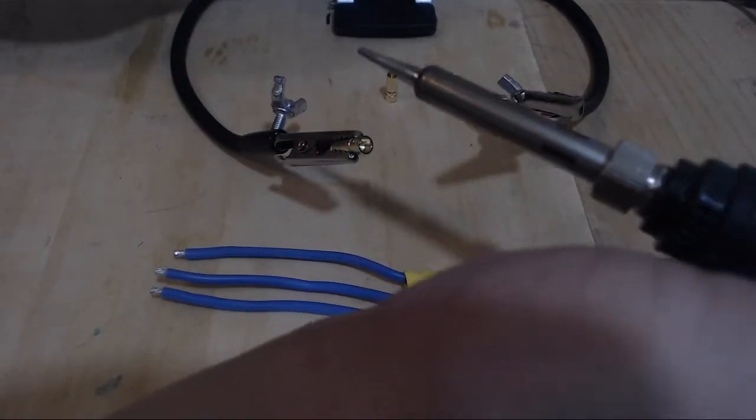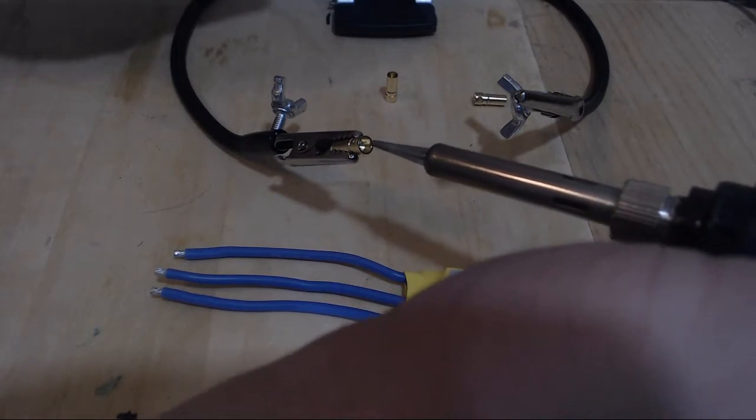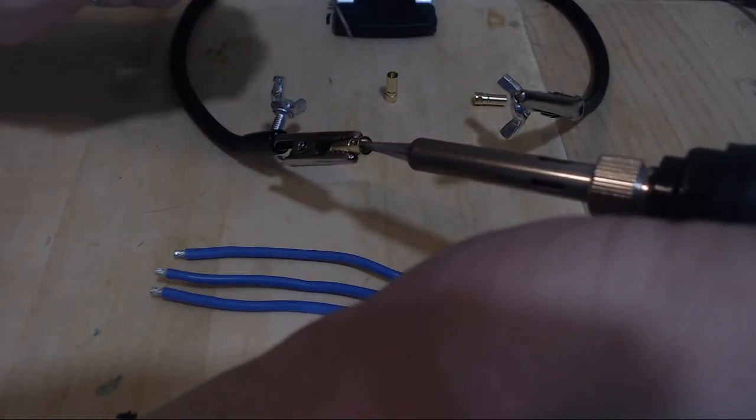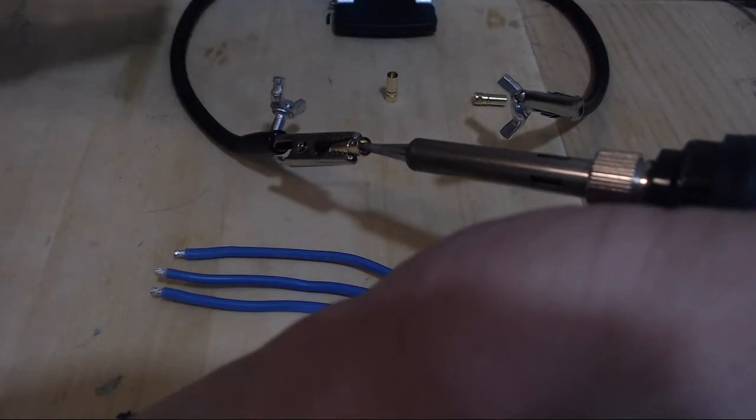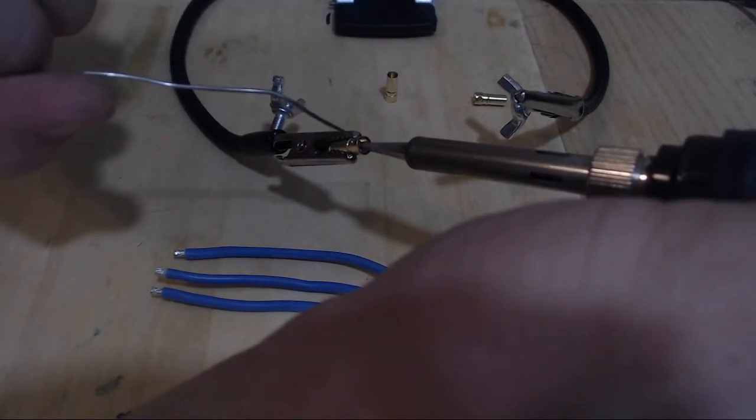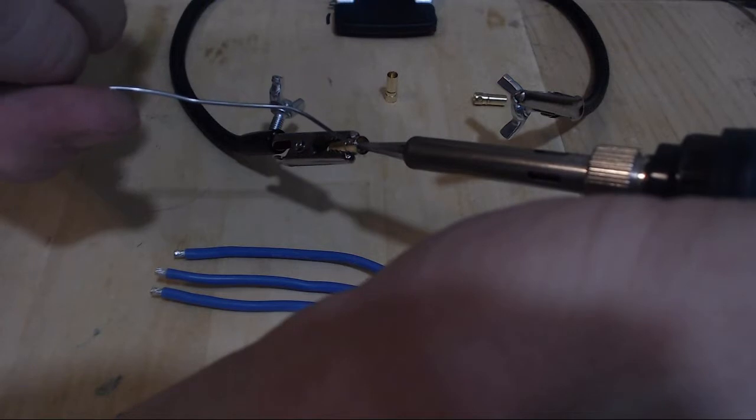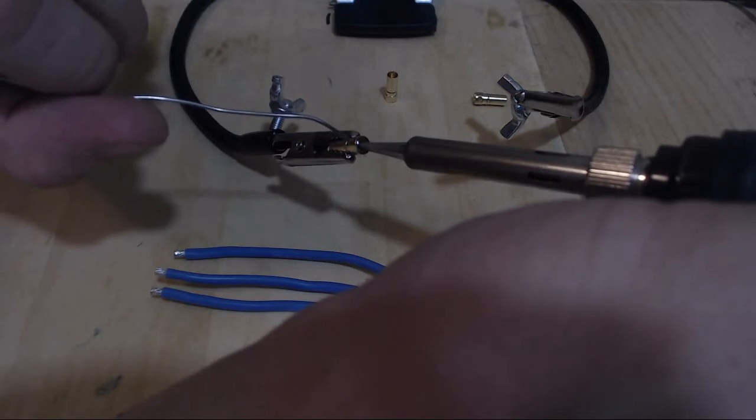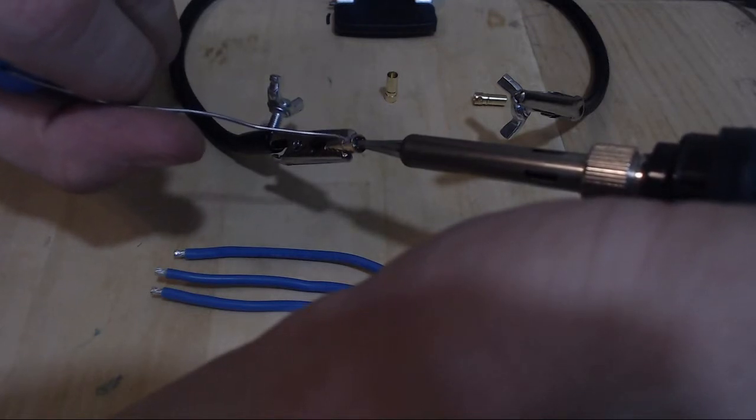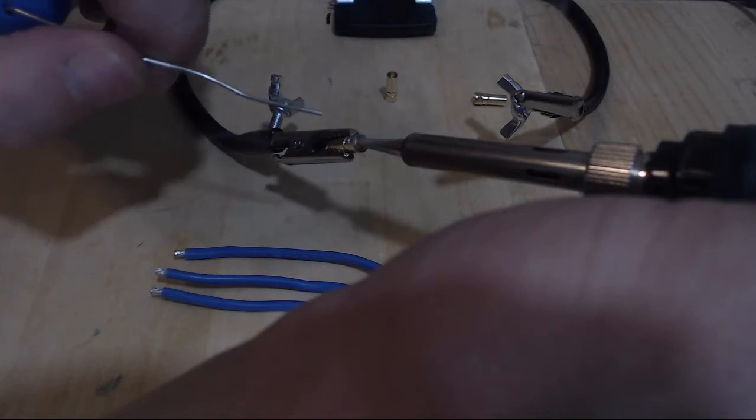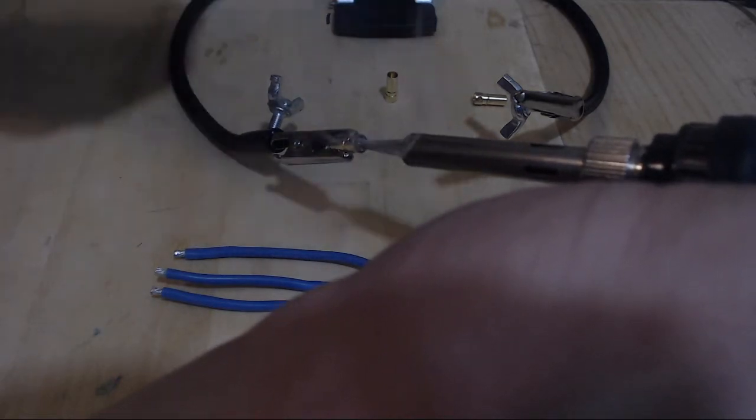Next thing we're going to do is take our soldering iron and place it inside the bullet connector. Then we'll take our solder with our other hand and we're going to feed it through that little hole. We're going to put a bunch of solder in here. You're going to think, wow, can it really hold that much? Yeah, you're going to want to fill it until that hole that we're feeding into is now completely filled with solder.